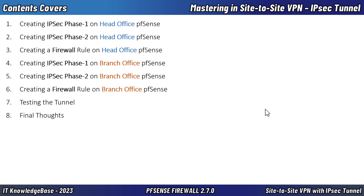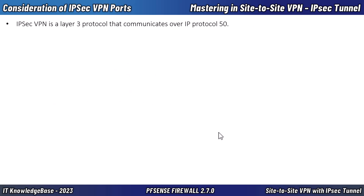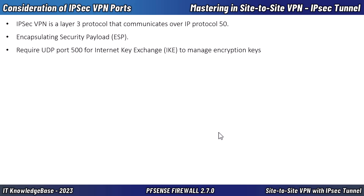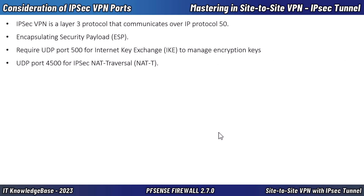IPSec VPN is a Layer 3 protocol communicating over IP protocol number 50 — Encapsulating Security Payload (ESP). It also requires UDP port 500 for Internet Key Exchange (IKE) and UDP port 4500 for IPSec NAT traversal. If UDP ports are blocked, devices may try TCP port 500 and TCP port 4500. If your internet is not directly connected to the pfSense firewall, open these ports on your border edge router or firewall.